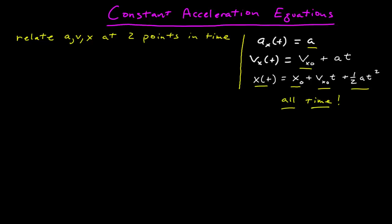Often when I solve problems, I'm not really interested in what's going on for all time. I want to know what's happening at two specific points in time. I want to use these expressions to derive other relationships that relate the acceleration, velocity, and position at two specific points in time. So let's identify those points: I'll call my first time some initial time t_i, and some final time t_f. Another parameter I'm often interested in is the time interval, which is t_final minus t_initial.